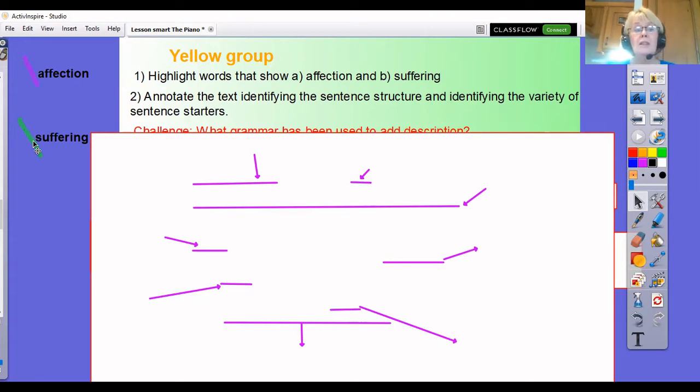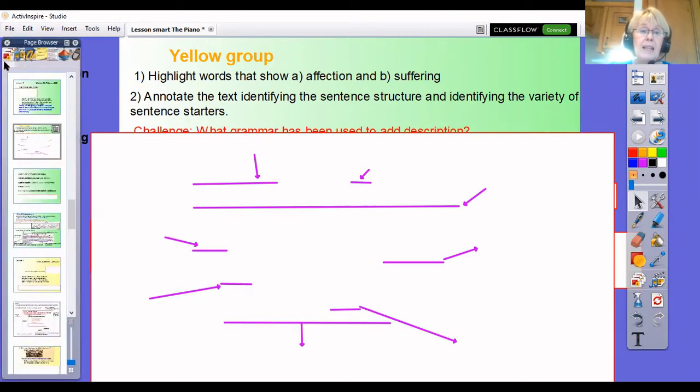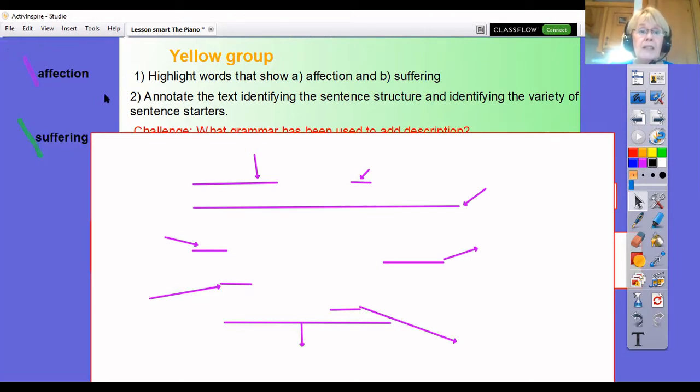So then when you've done that what I would like you to do is to then go to the text, let's get rid of this, go to the text and start to annotate it where you can identify the different types of sentence structures that are there and also to identify the variety of sentence starters, because if you start to look at these you can start to mimic them. But again don't worry I shall show you what you're going to do.